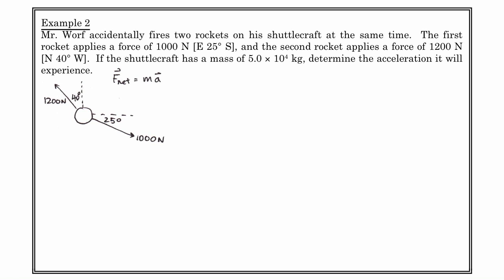We always start with a free-body diagram and write F net equals MA. We resolve force 1: F1 is 1,000 cos25 in the i-hat direction minus 1,000 sin25 in the j-hat direction. The negative sign indicates downward — we're assuming north is positive and east is positive, just like the Cartesian coordinate system.